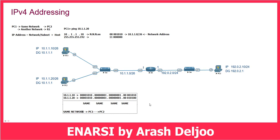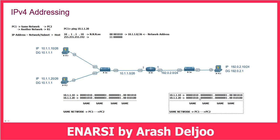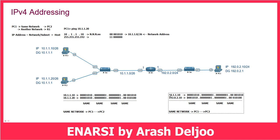Routing can occur in a PC or in a router. In a PC, routing means determining whether the destination IP address is in our own network or in another network. Now assume we want to send traffic to PC3. We do the same comparison. PC1's IP is 10.1.1.10 and PC3's IP is 192.168.x.x — it is obvious that the first 26 bits of these two IP addresses are not the same. Therefore, we can understand that PC3 is residing in a different network.